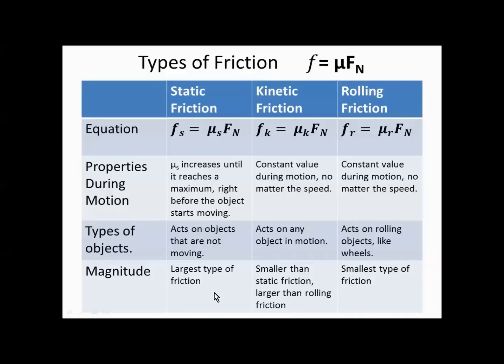In terms of magnitude, static friction is the largest type of friction — it's the hardest to overcome. Kinetic friction is the second largest; it's smaller than static but larger than rolling friction. And rolling friction is the smallest type of friction, providing the least resistance to motion.